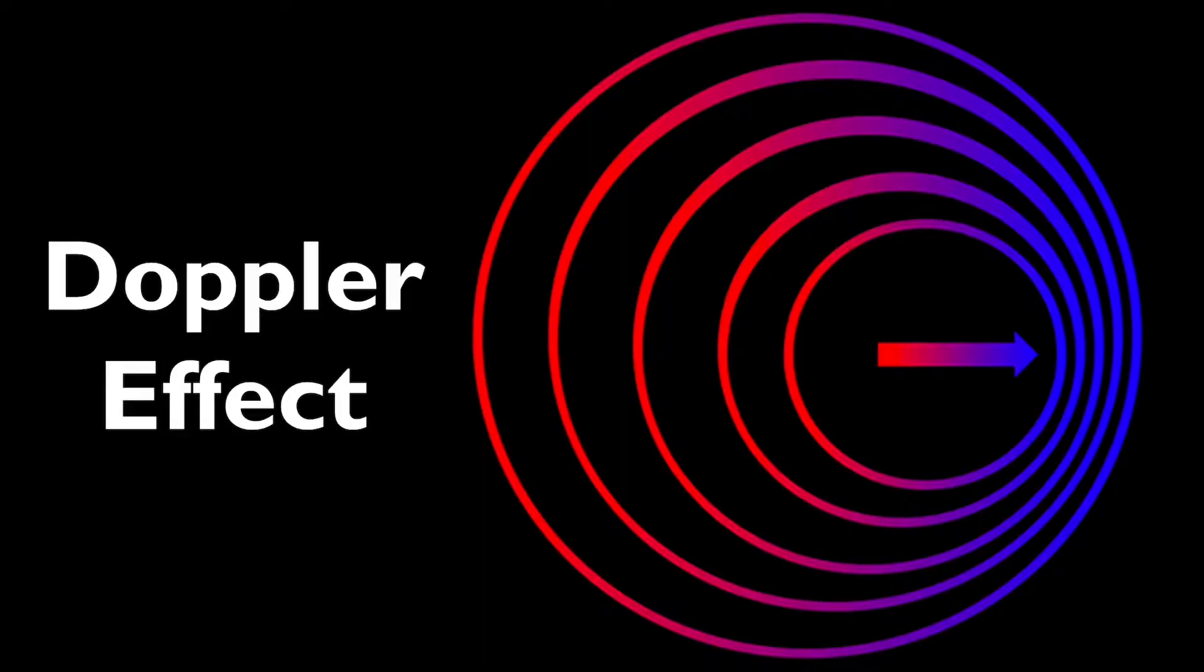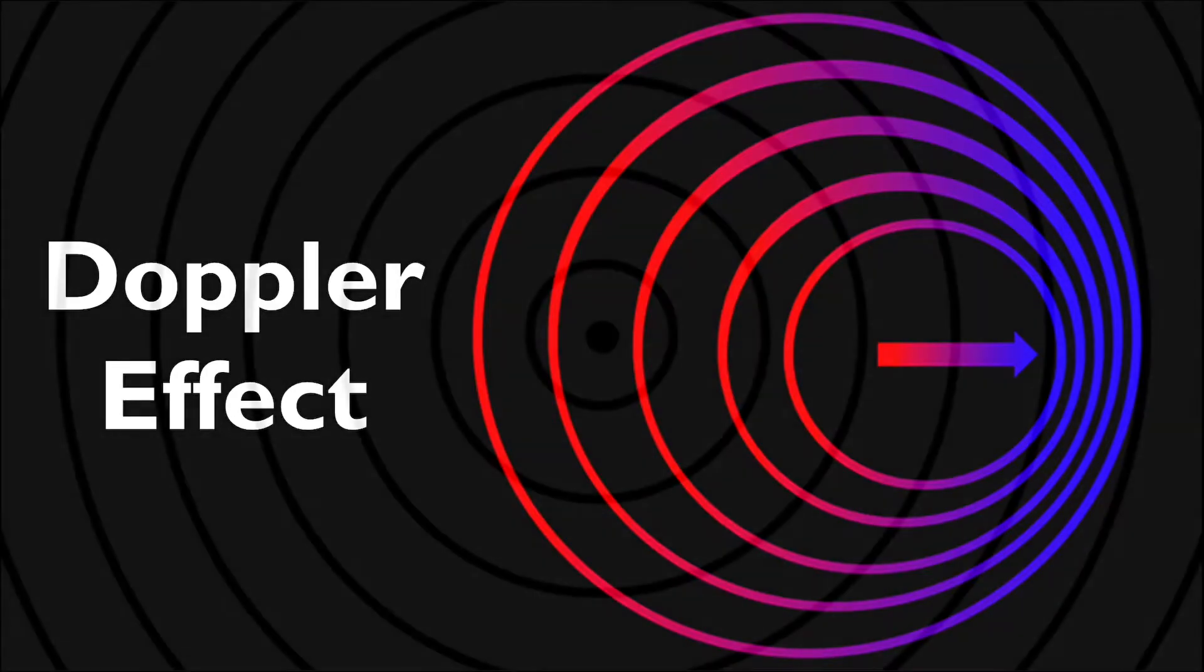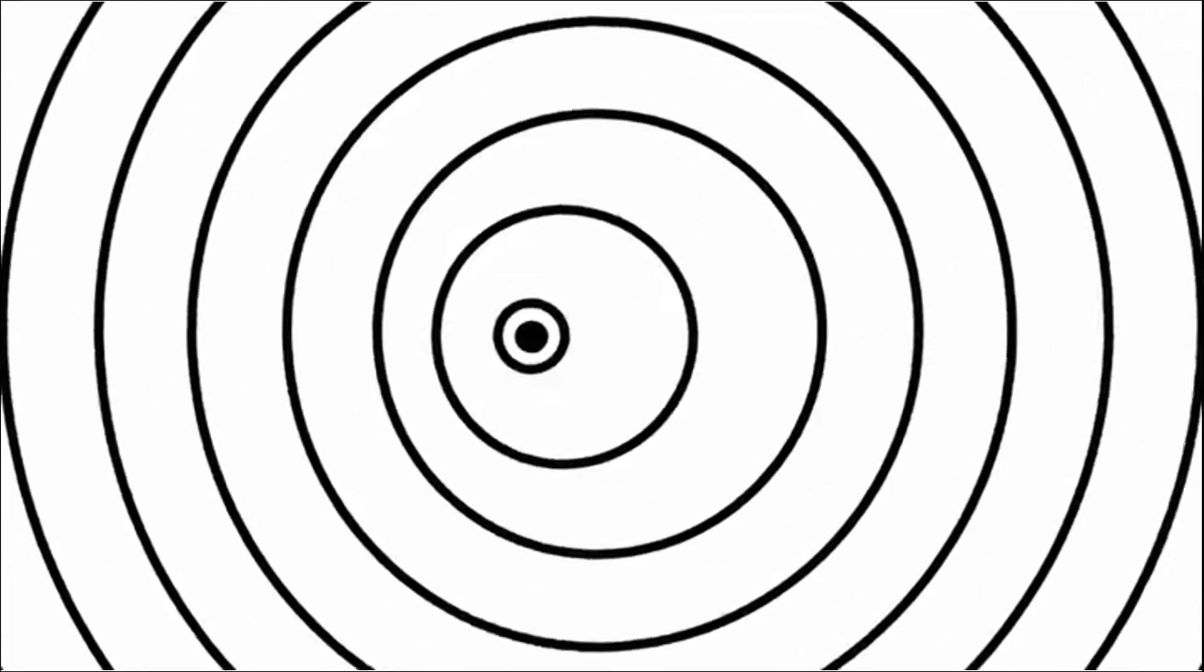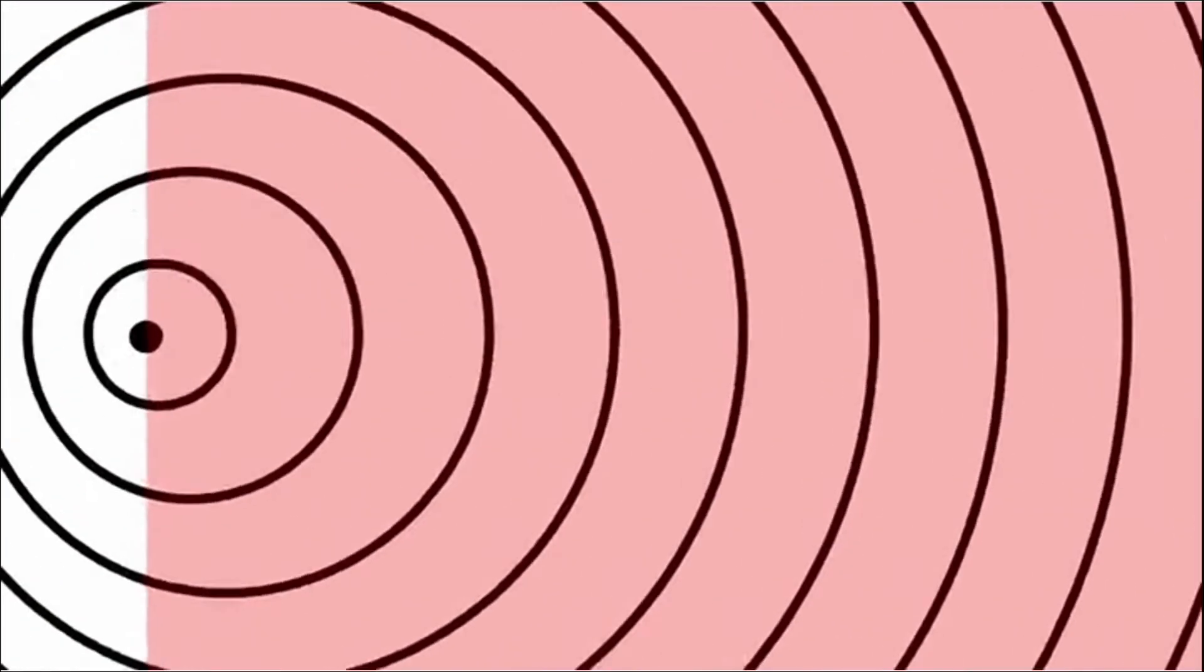So when a wave source begins to emit circular waves, the circular waves remain equidistant, equally spaced apart, if the object remains stationary. But when it begins to move, notice how certain parts of the waves are getting pushed closer together while other parts are spreading apart?